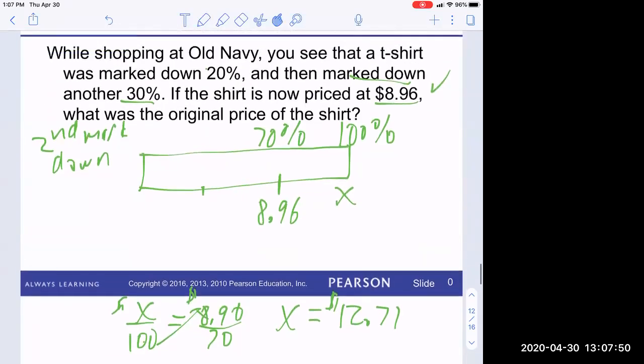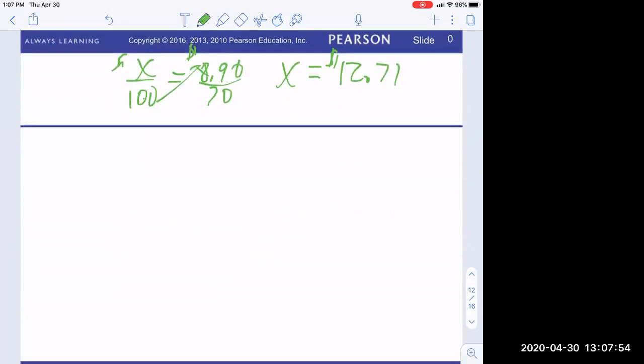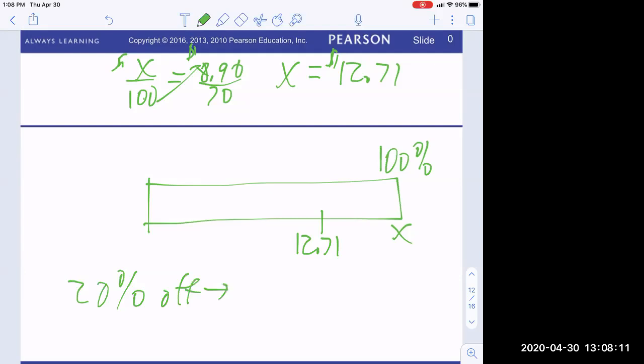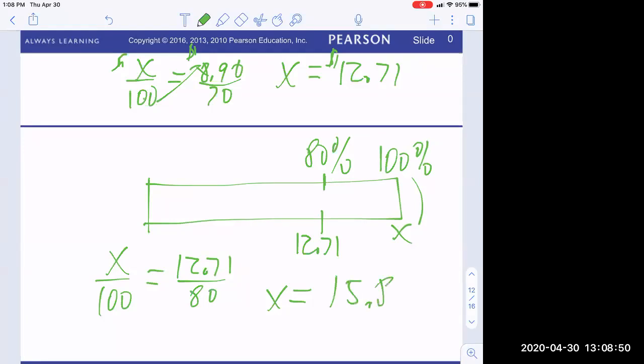But now it's only marked down 20%. So my bar is going to look like this. I don't know what the original price was. I know it's $12.71 now. I know this is 100%. But 20% off means I have 80% left. And that's what that is. One more proportion. X over 100 equals 12.71 over 80. Solve for X. And that's what that is. The original cost of my shirt was $15.89.